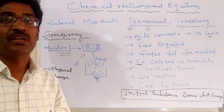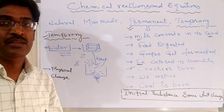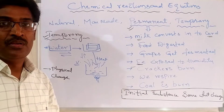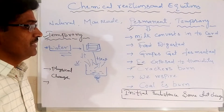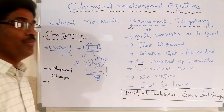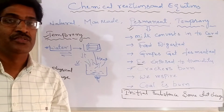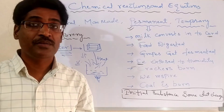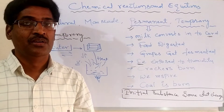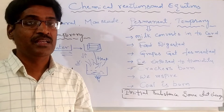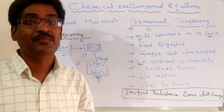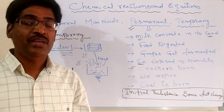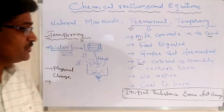Crackers burn. When we respire, we take in oxygen and give out carbon dioxide — the initial and final substances are not equal. That is why it is a permanent change. Coal burns — that is also a permanent change. In permanent changes, the composition changes; it is not a physical change but a chemical change. That is why it is called a permanent change, where a chemical reaction has occurred.